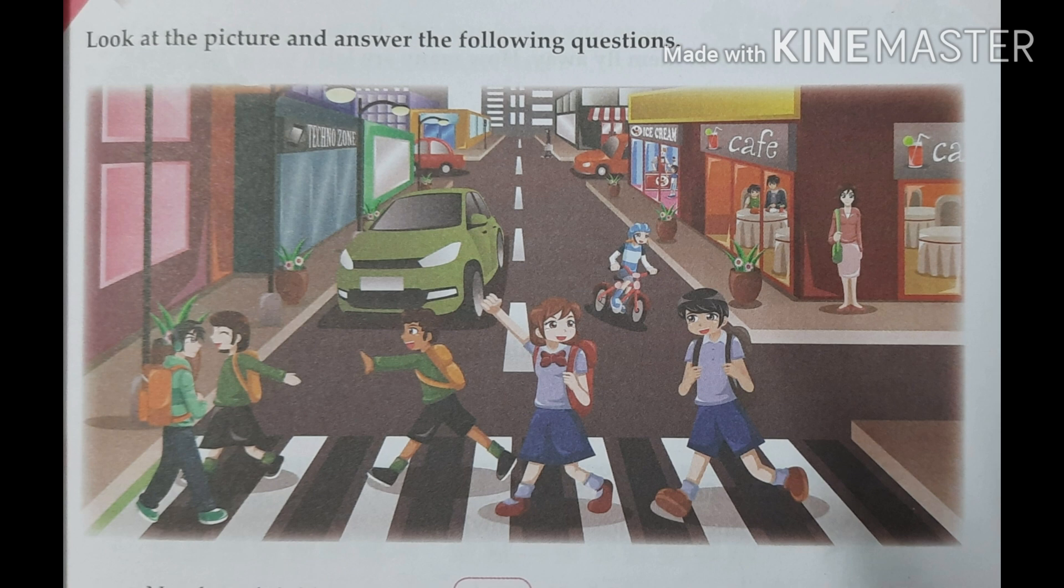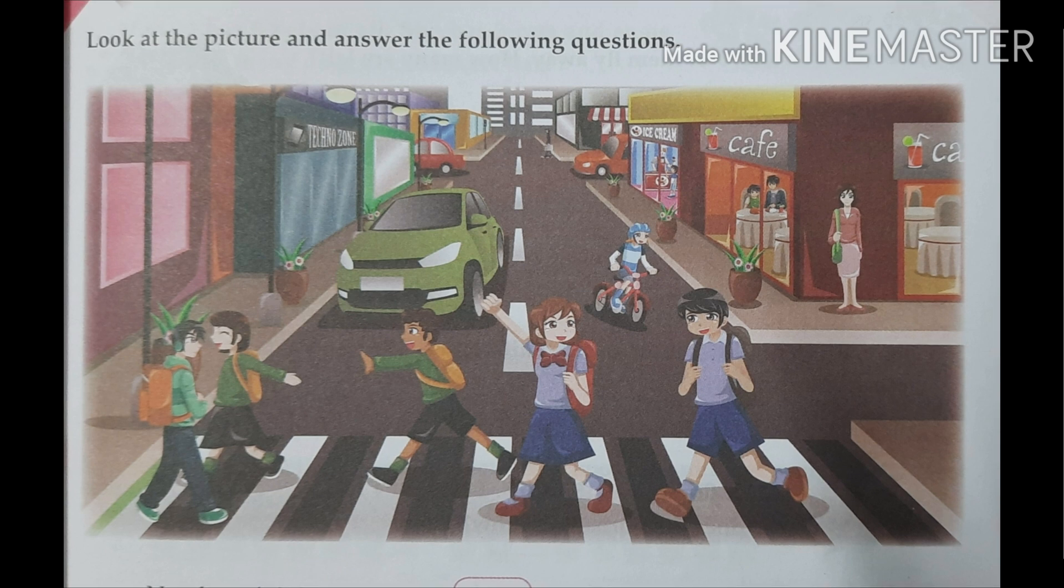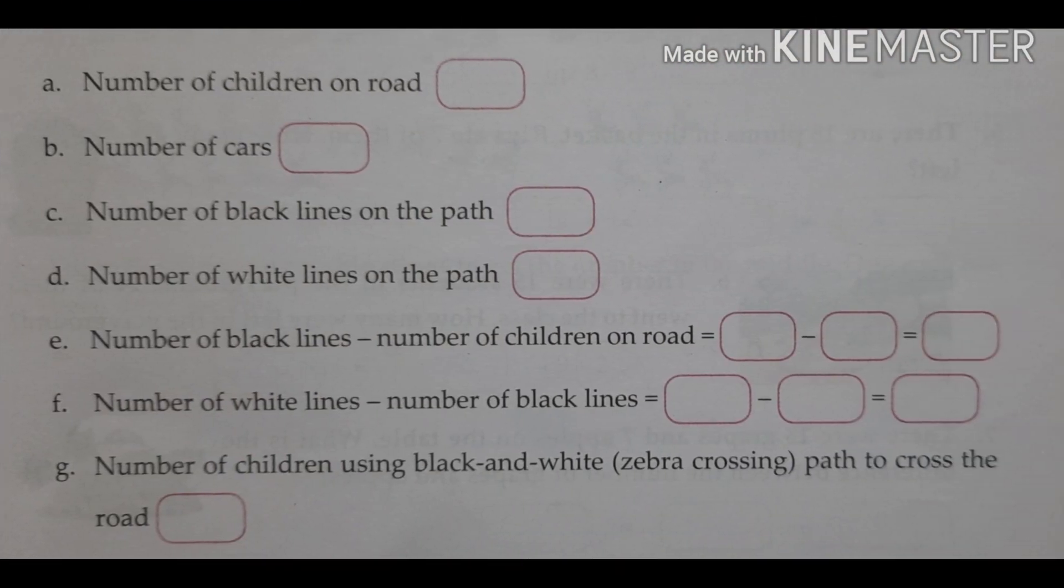So now let us go to the questions. A. Number of children on road. Total number of children. Count and write it. Number of cars. See how many cars? Very nicely.